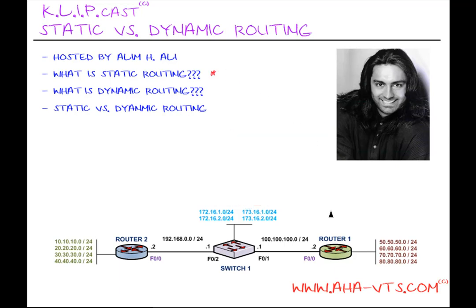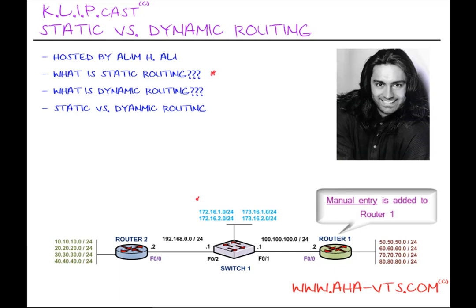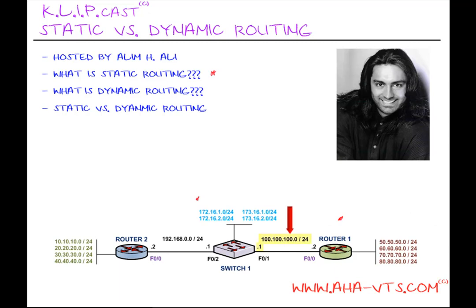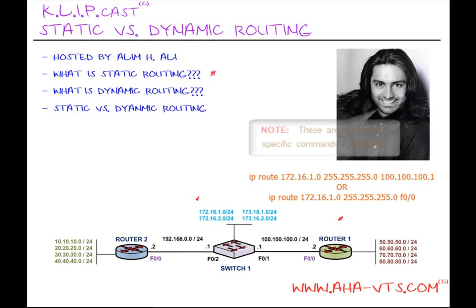Let's illustrate this with a simple example shown on the screen. Say we want to create a static route on Router 1 to communicate with the network 172.16.1.0/24 that sits behind Switch 1. A manual entry is added into Router 1 that points to either the next-hop IP address — in this case 100.100.100.1 — or the outgoing interface connected to that next hop, which in this case will be FastEthernet 0/0. The following syntax is what is entered into Router 1, and these are Cisco IOS specific commands and syntax.